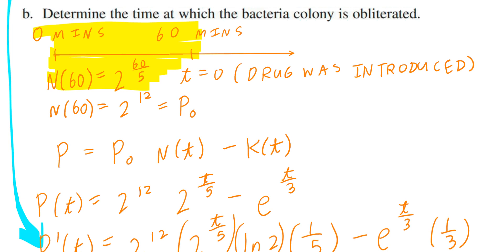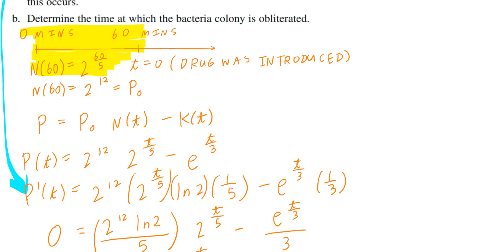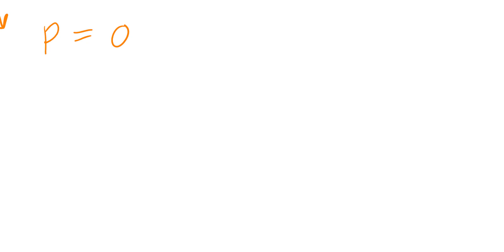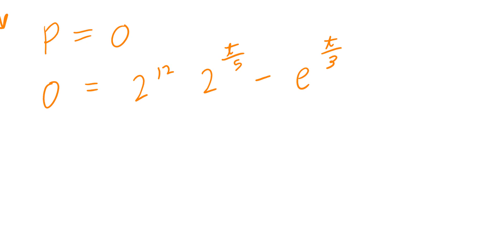Part B: determine the time at which the bacteria colony is obliterated. Translating into math, this means when is the population equal to 0. So: 0 equals 2 to the power of 12 times 2 to the power of t divided by 5, minus e to the power of t divided by 3.